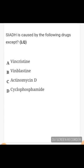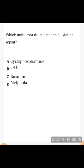SIADH is caused by all of the following drugs except - this is a very common pharmacology topic. Options: vincristine, vinblastine, actinomycin D, cyclophosphamide. All of them cause SIADH except actinomycin D. Regarding which anti-tumor drug is not an alkylating agent: options include cyclophosphamide, 5-fluorouracil, busulfan, melphalan. The answer is 5-fluorouracil, as it is an antimetabolite, not an alkylating agent.